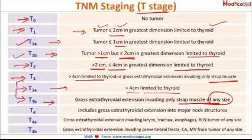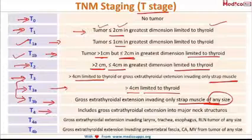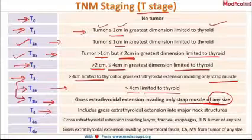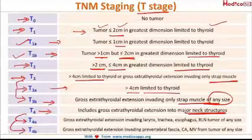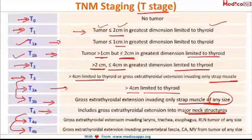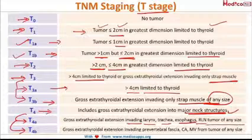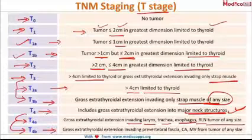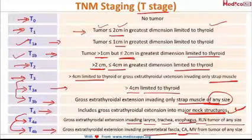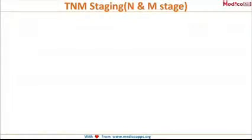Then comes T4, subdivided into T4a and T4b. In T4a, major neck structures are being invaded by the tumor of any size — these include the larynx, trachea, esophagus, recurrent laryngeal nerve, and soft tissues. In T4b, the tumor has invaded the pre-vertebral fascia, carotid artery, and mediastinal vessels, from a tumor of any size.